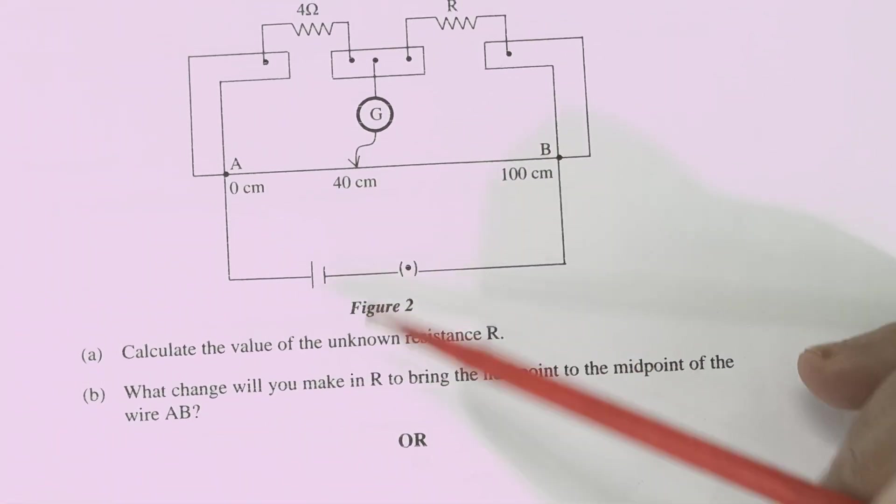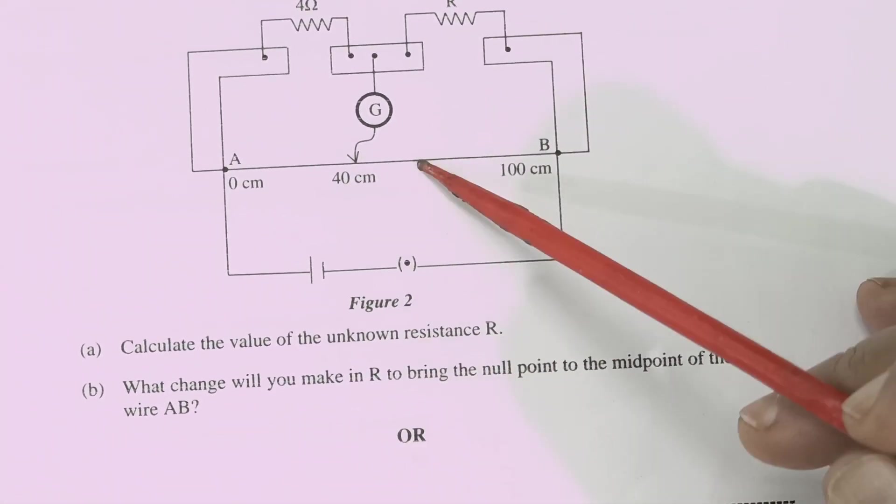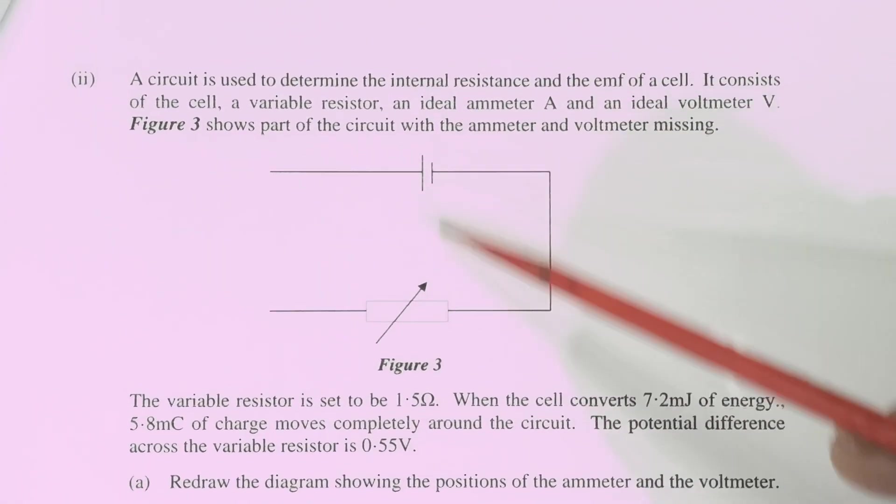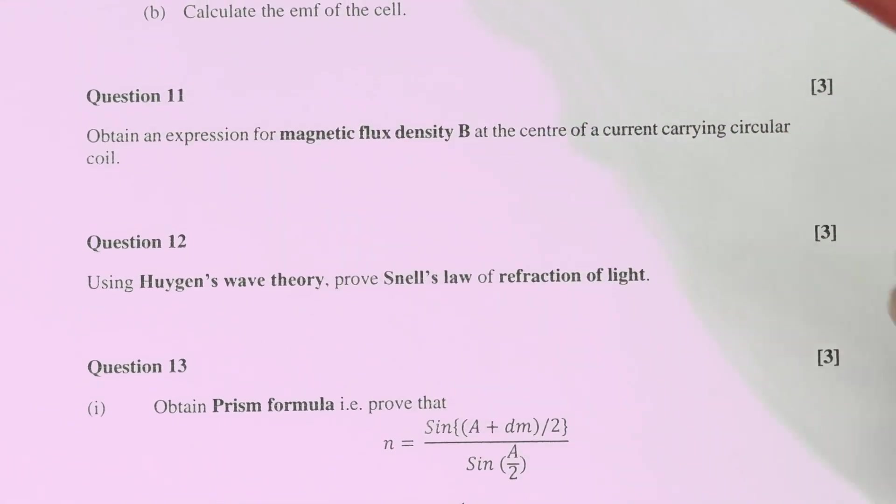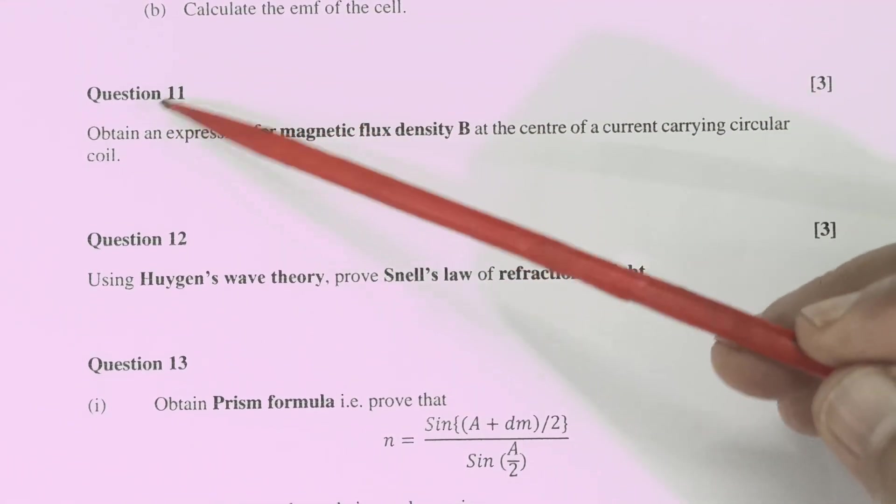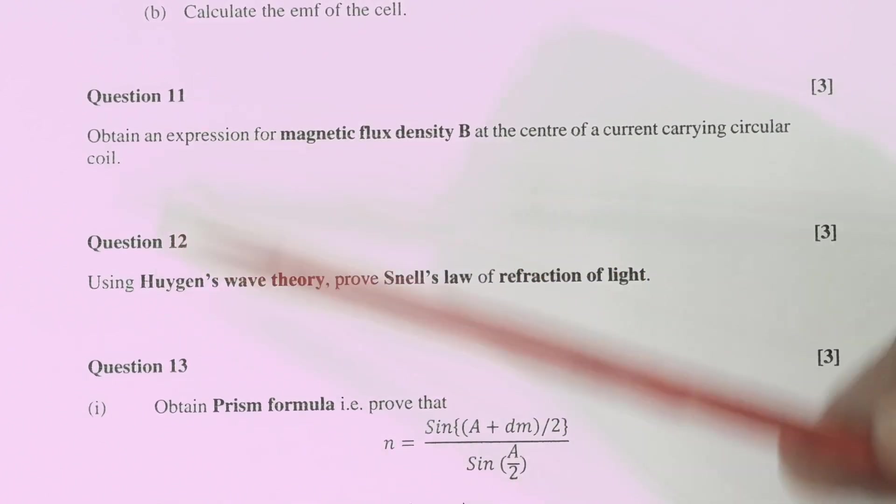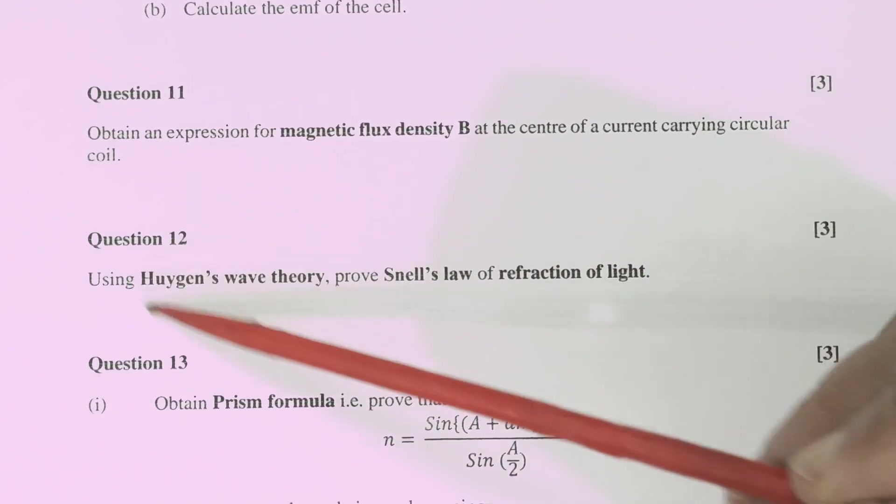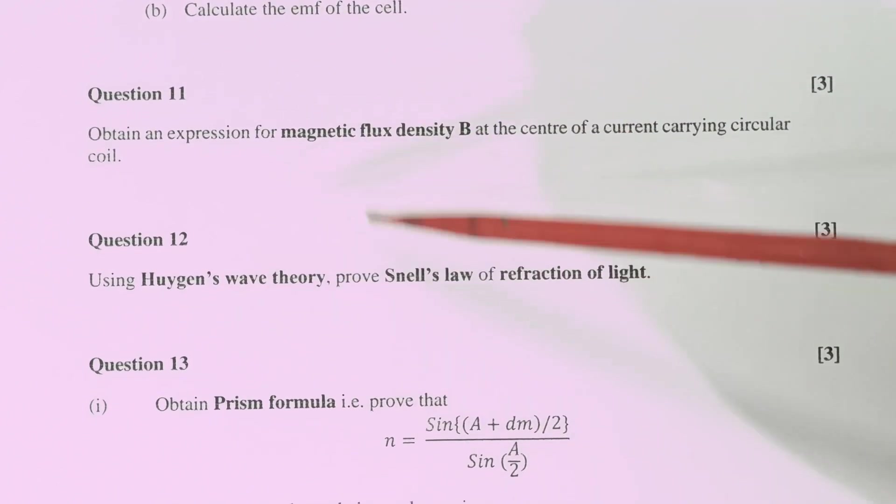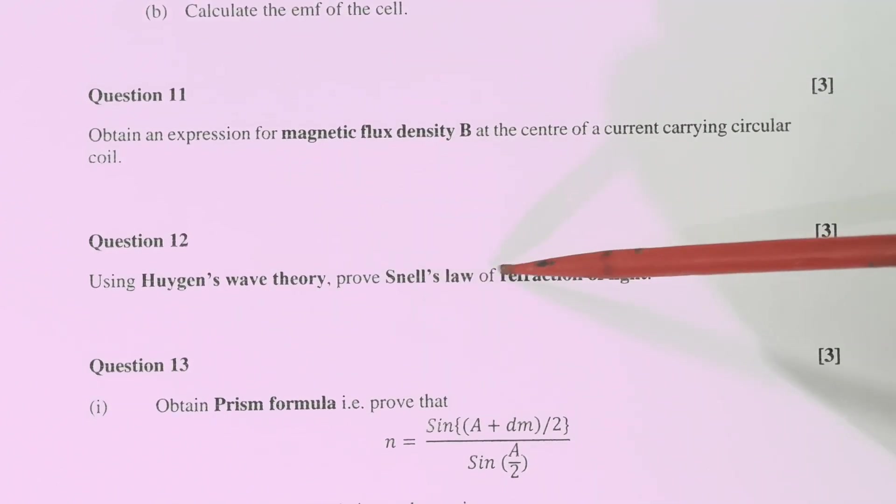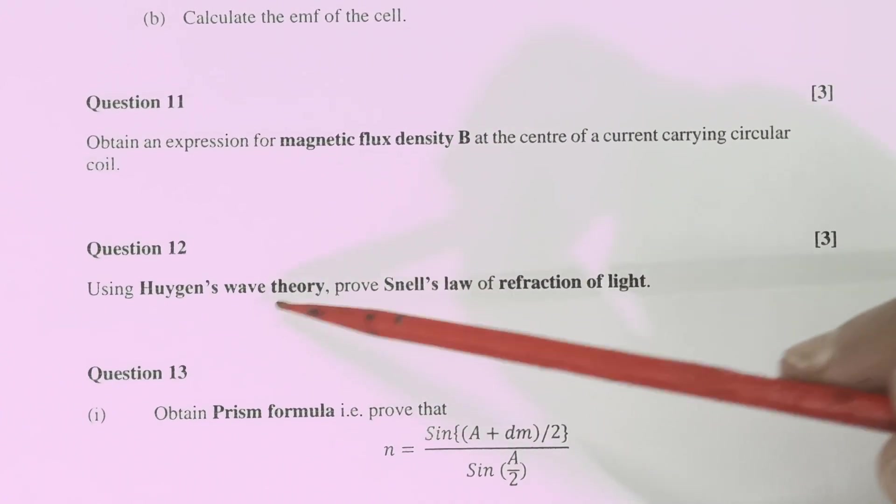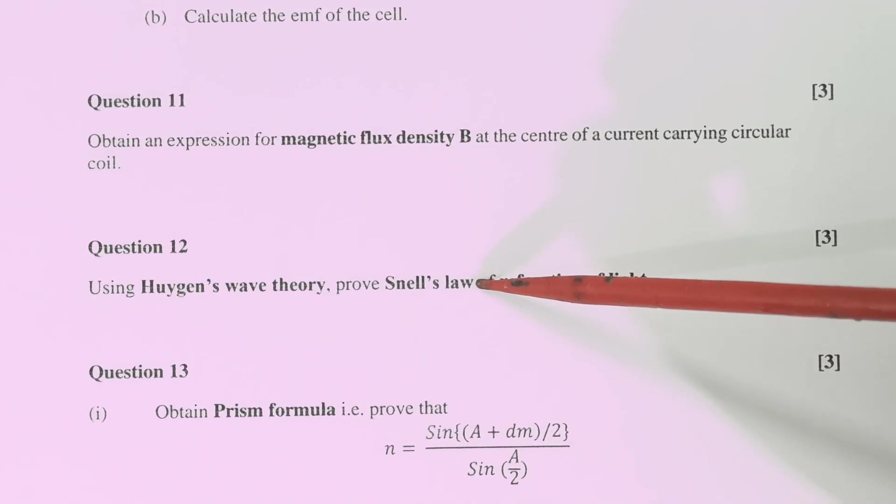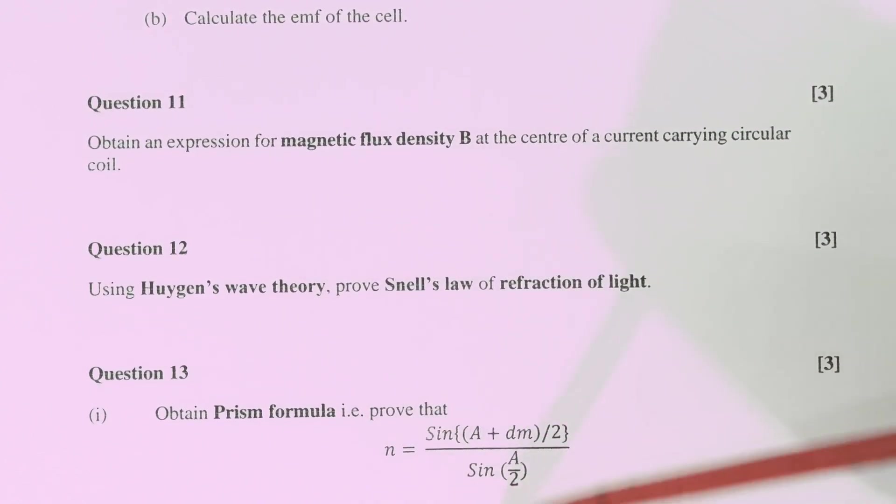Now from the current electricity you are having choice. This question or from the same topic this question you can attempt any of these two. Now observe the earlier two questions were numerical. But in 11th question again you are having a derivation. Then Huygens wave theory. You need to write 2-3 points of the wave theory. And then Snell's law or Snell's law of refraction that you have to prove. So this is again this question is little you can say longer in comparison to the marks given to it. That is 3. And question number 13 is again a derivation related with the prism.